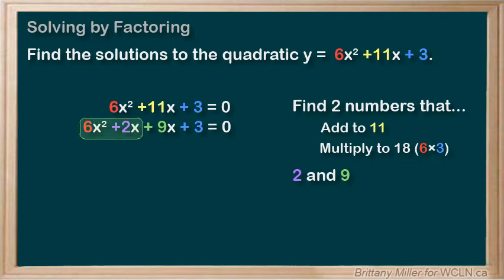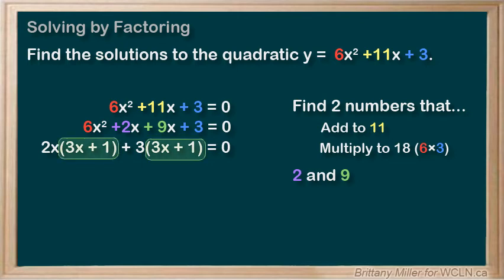We can take a 2x out of the first half and a 3 out of the second half, giving us 2x times 3x plus 1 plus 3 times 3x plus 1. Then we take the 3x plus 1 out front, leaving us with 3x plus 1 times 2x plus 3 equals 0.